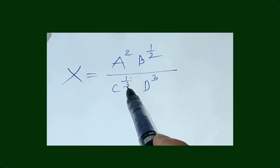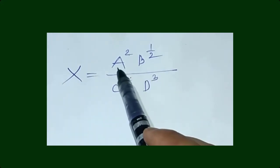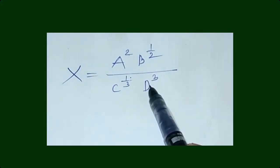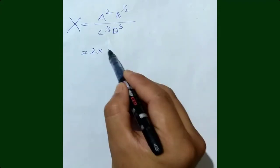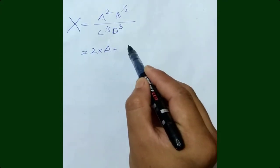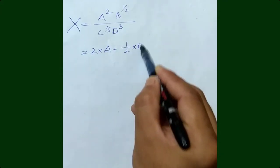Therefore, these powers will be multiplied to the individual physical quantity's error. That is, 2 times A plus 1/2 times B plus 1/3 times C plus 3 times D.